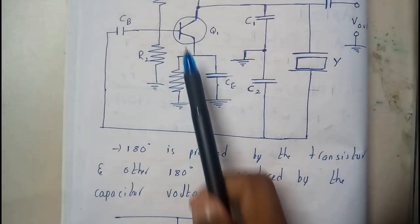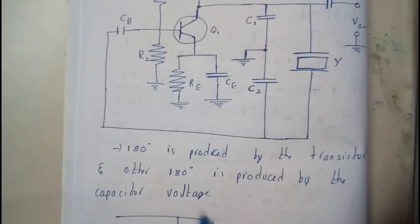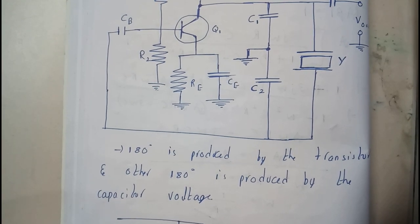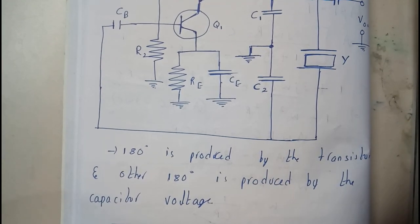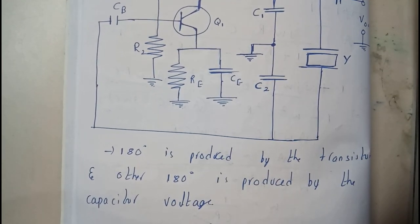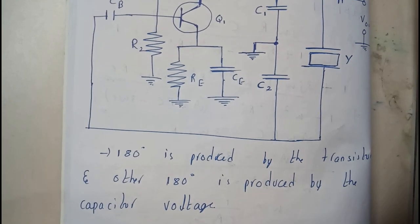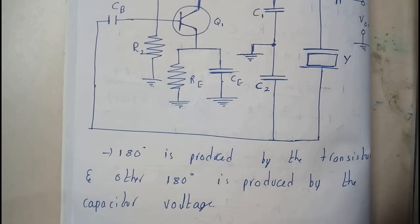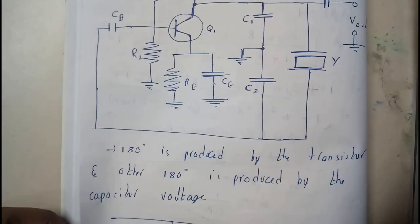Basically, 180 degrees phase shift is produced by the transistor, and the other 180 is produced by the capacitive voltages and everything in that circuit. There are many things in that circuit: an inductor, resistor, capacitor. It's a big circuit.